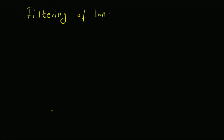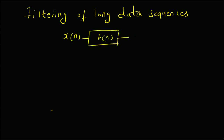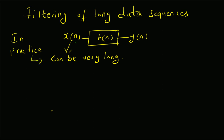Hello, welcome. In this short video, let us look at the filtering of long data sequences. Consider a linear system where the input x(n) goes through a linear system with impulse response h(n) and the corresponding output is y(n). In practical applications, x(n) can be a very long data sequence — in practice, the input x(n) to a linear filter can be of very long length.